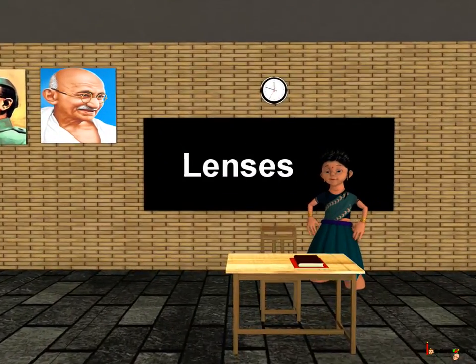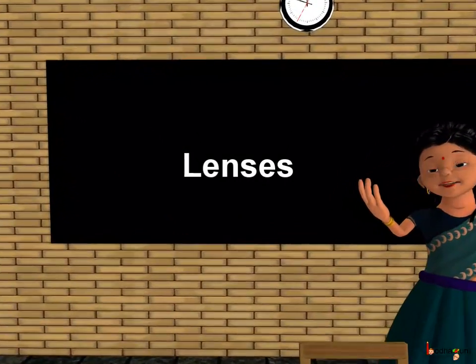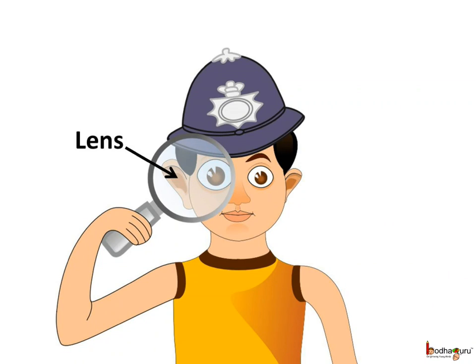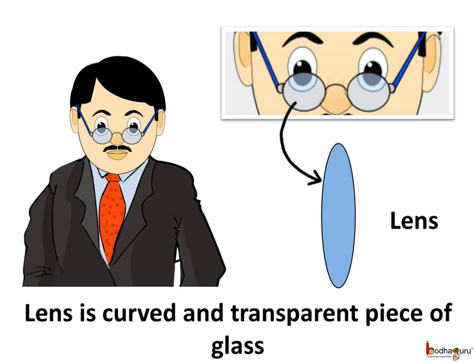Good morning children. Today we shall learn about lenses. You must have seen detectives looking for clues using a round glass in their hand, on TV or in story books or even detective novels. The objects seem larger when he looks through that glass, but any kind of glass can't do that. That glass is a lens. Also, people with poor sight wear spectacles to see better, and that glass in spectacles is a lens too.